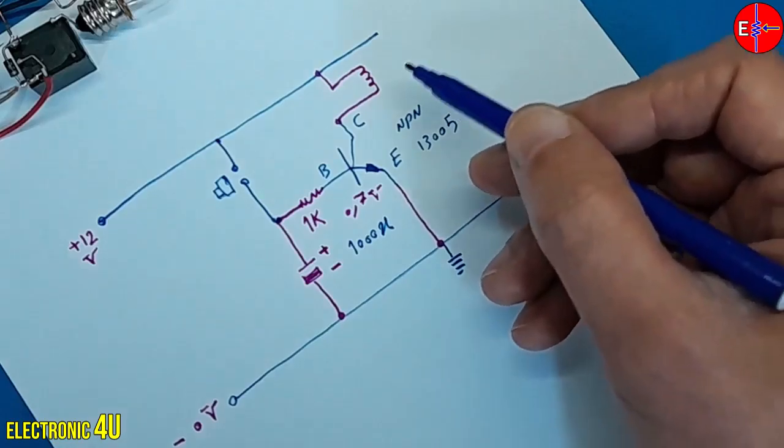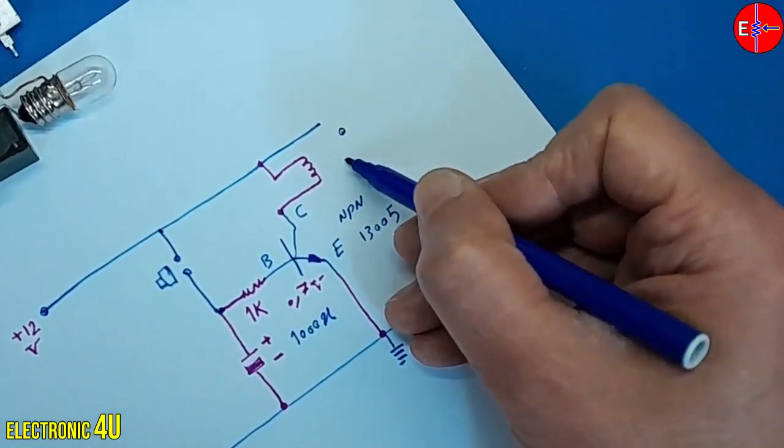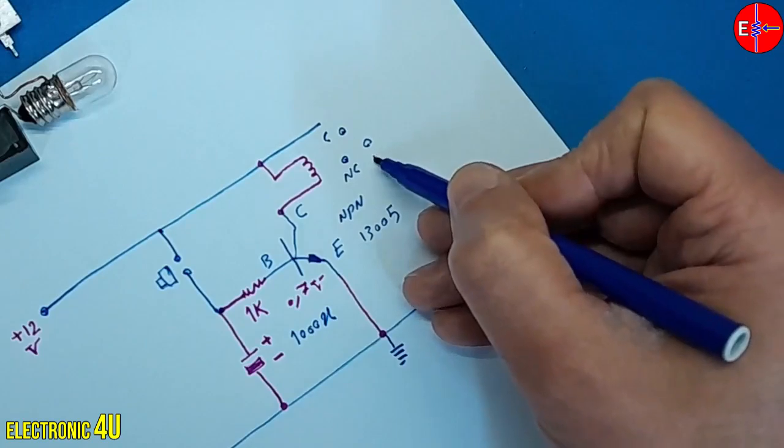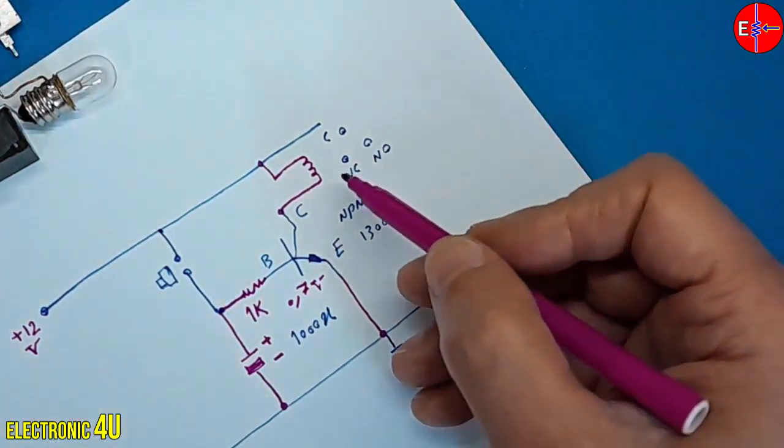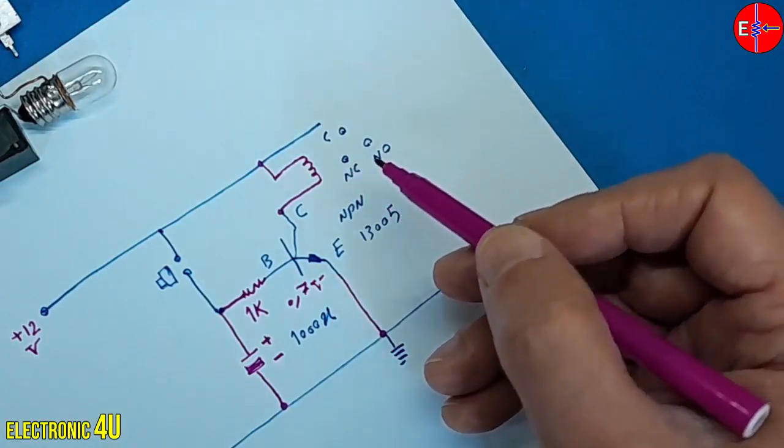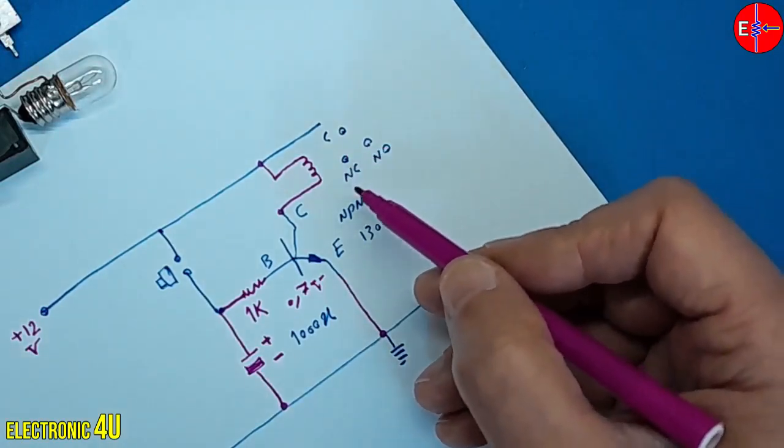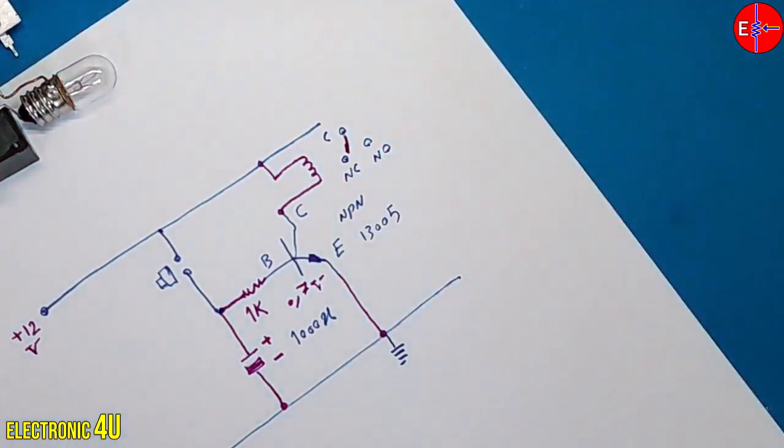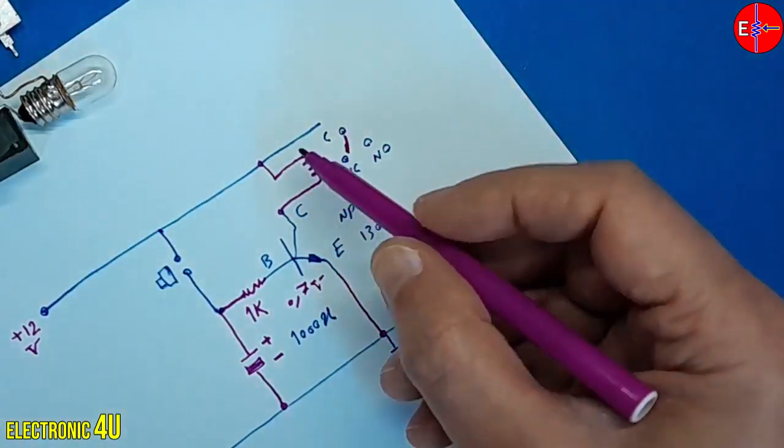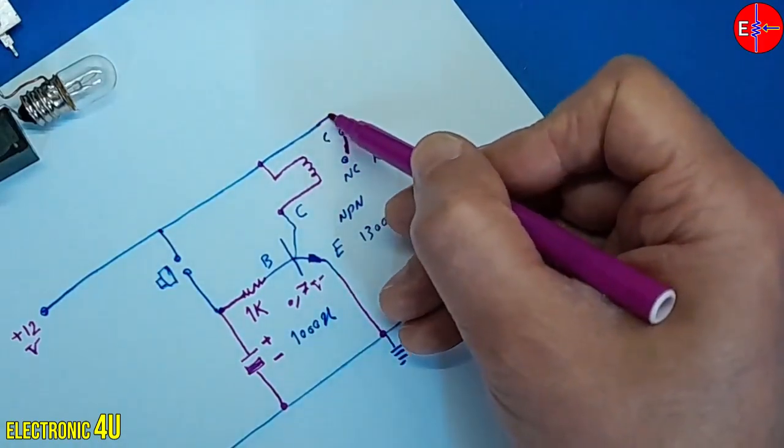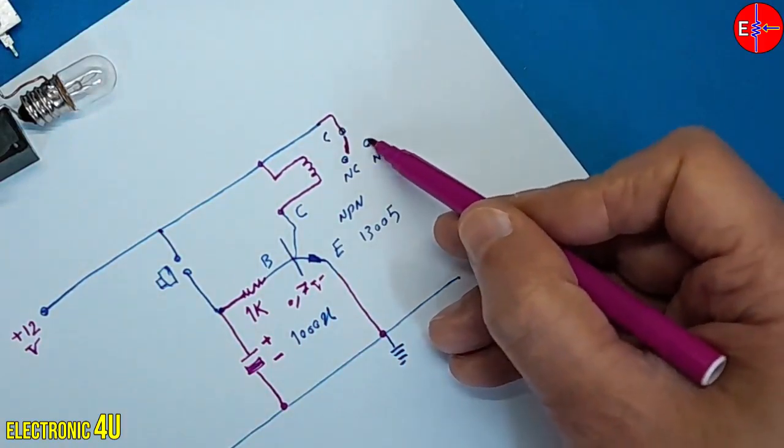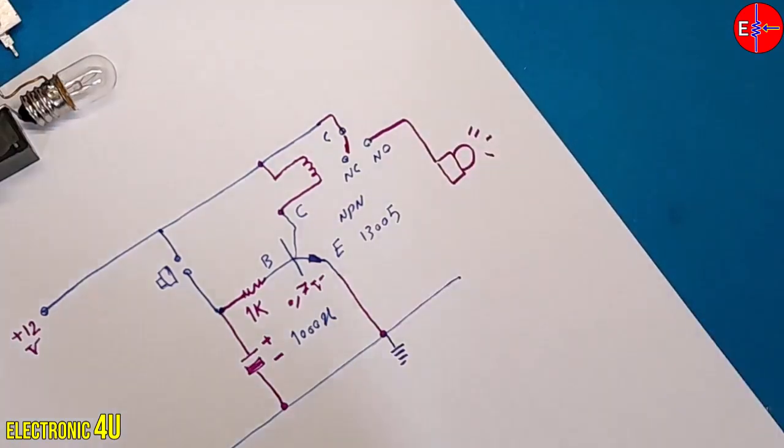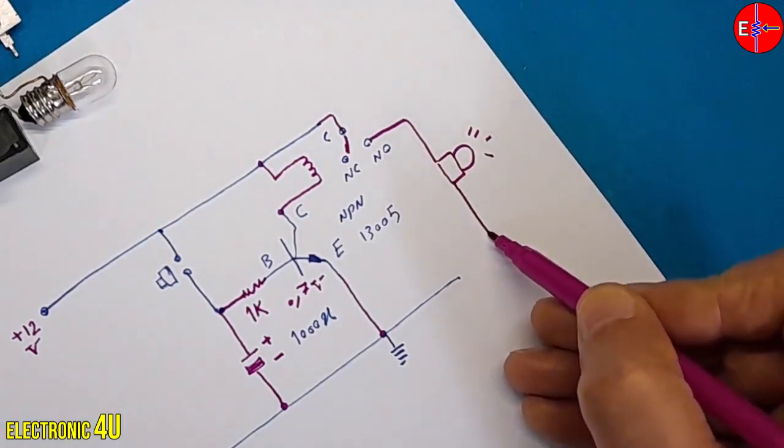Now, I draw the relay connections. There are three terminals here: Common, normally closed, and normally open. There is a connector inside the relay that, when the relay coil is activated, connects to the normally open terminal. In normal circumstances, this connector is connected to the normally closed terminal. I connect the positive voltage to the common terminal, and connect the normally open terminal to the lamp.